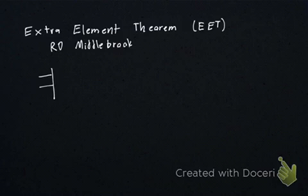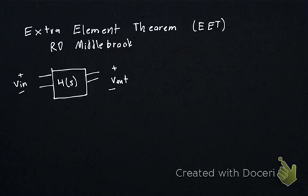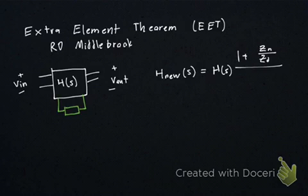Essentially what it says is if you have a two-port network where you've got some input voltage and current, some output voltage and current, and a transfer function H(s), then if you choose to add an additional element in parallel to the existing network, you can calculate your new transfer function from your old one. H_new as a function of S is just your old transfer function H(s) times 1 plus Zn over Z divided by 1 plus Zd over Z.